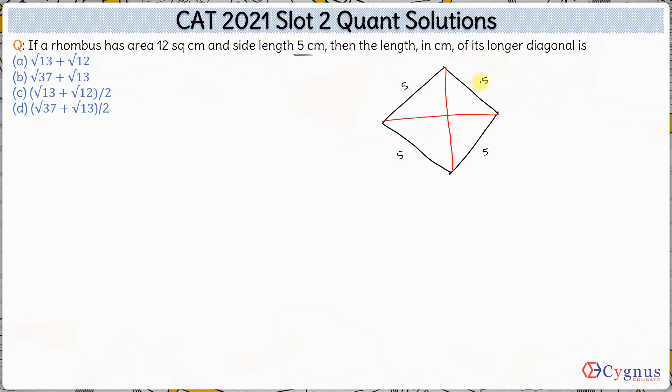Also in a rhombus we know that the diagonals perpendicularly bisect each other. So this part will be equal to this part and this part will be equal to this part. So let's say this is x. So this will also be x and if this is y this will also be y over here.